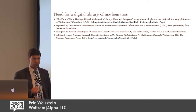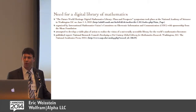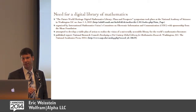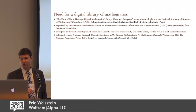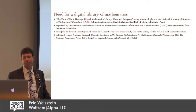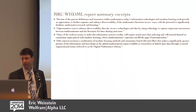Just last year, a number of mathematical organizations got together in Washington, D.C. to talk about the need for a future digital library for all of mathematics. This was held at the National Academy of Science, sponsored by the Sloan Foundation, organized by the International Mathematical Union. In this meeting, the participants attempted to develop a plan for what it would take to create such a library. The report just came out fairly recently — I provided a link to it — and these are some of the excerpts from their summary.